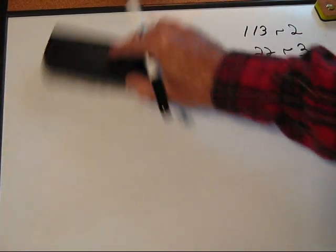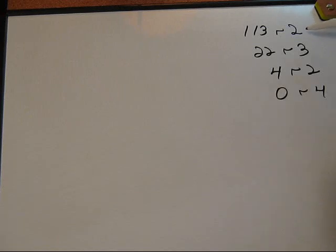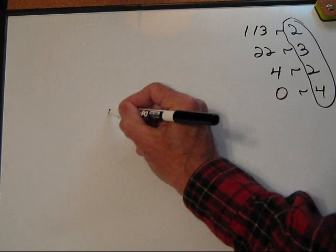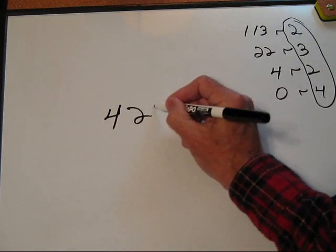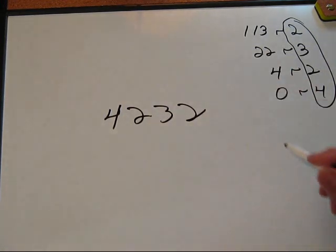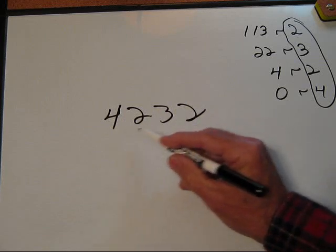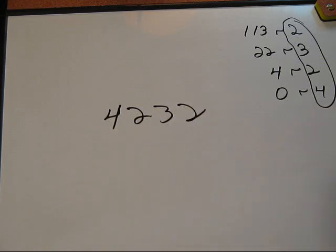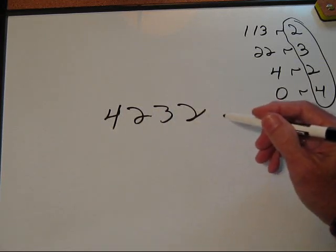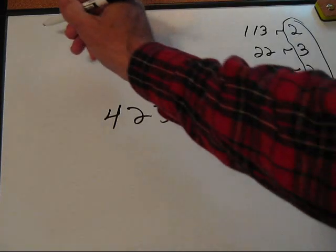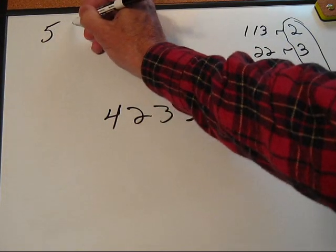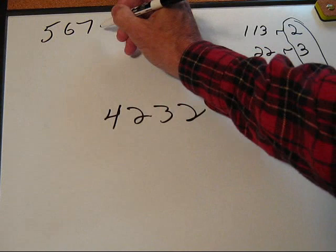All right. So now, we have this series of numbers over here. What we want to do is look at the remainder column here. And we write this number, but from the bottom up. 4, 2, 3, 2. This number, 4232, is the base-5 equivalent of our number, which we started with, which was 567, in base-10.